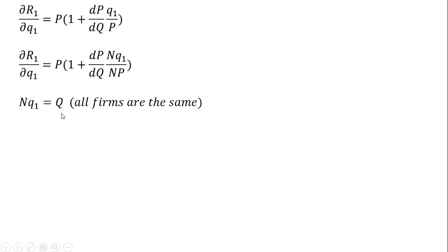Here is the key: the number of firms times the output of firm 1 equals the market output, Nq₁ = Q. We're assuming all firms are the same, so each firm produces an identical level of output. I'm going to substitute N times the output of firm 1 with market output capital Q.